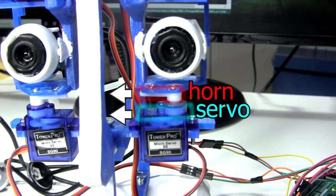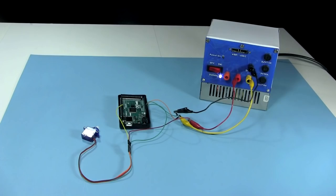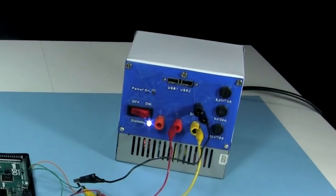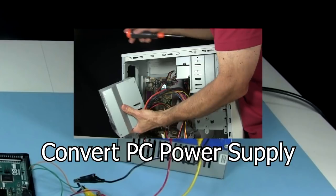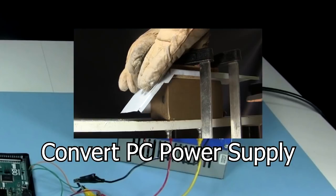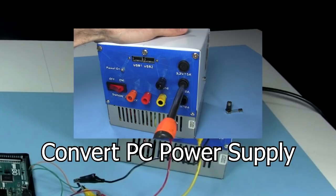So I need to position the horns at the center of each servo's range of motion. To do that, I'm powering the servos directly from my PC power supply. I have another video showing how I made that power supply, and there will be a link to it at the end of this video, and in the video description.